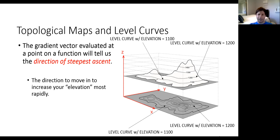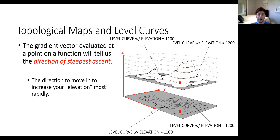Consider a position on the map right at an elevation of 1,100 along that level curve. We can look straight down and project that same point into our contour map — these two points are the same, one is just a projection downward. If we evaluate the gradient vector at this point in the contour map, the gradient vector would point in the direction of steepest ascent, moving us towards the top of that mountain as quickly as possible.